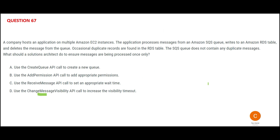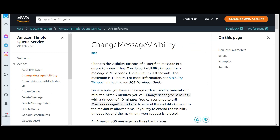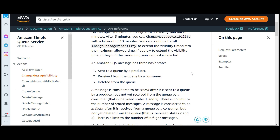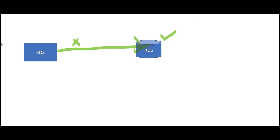Whenever you get such problems, thumb rule — remember it is always to do with the Change Message Visibility API. If you alter this setting, primarily what it does is: in SQS there are three steps — the producer will send the message to the queue, then the consumer reads the message, and after the consumer processes the information, it tells SQS to delete the message from the queue. But if the message is not visible, then the delete does not happen.